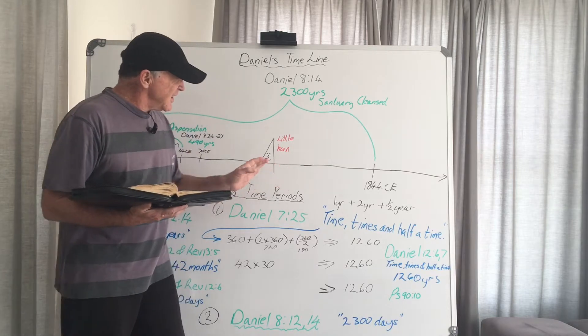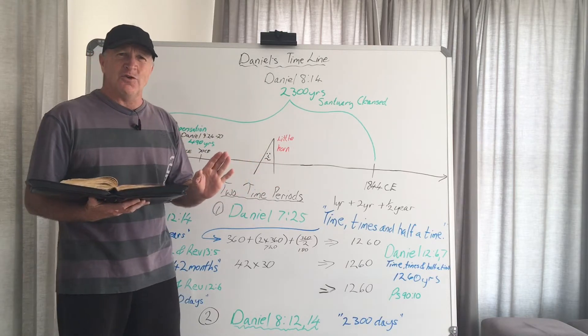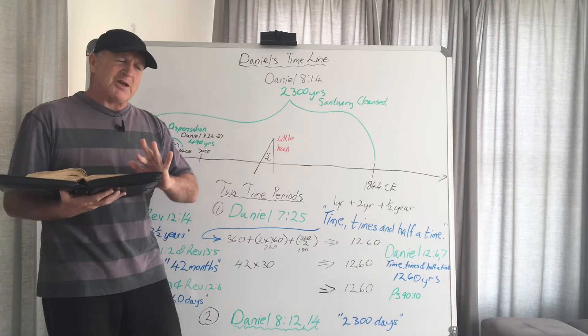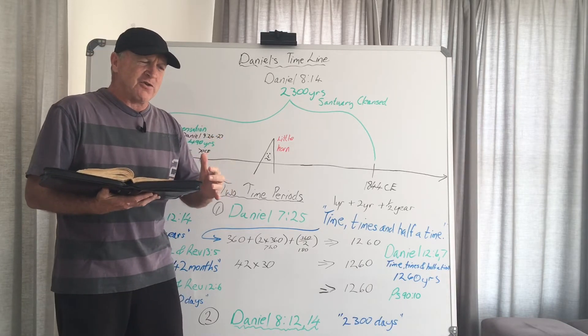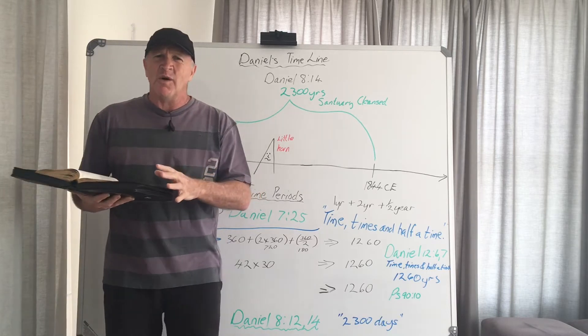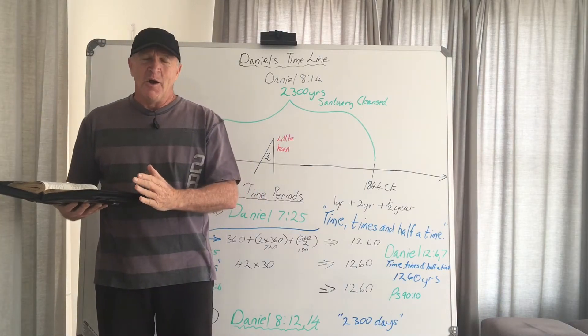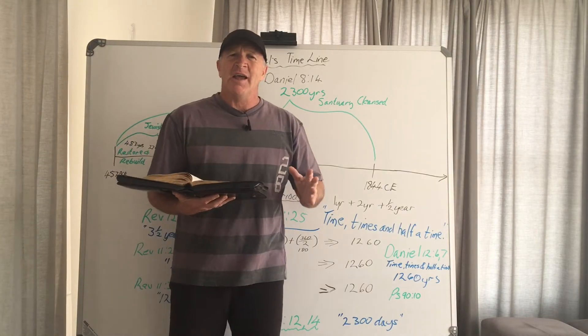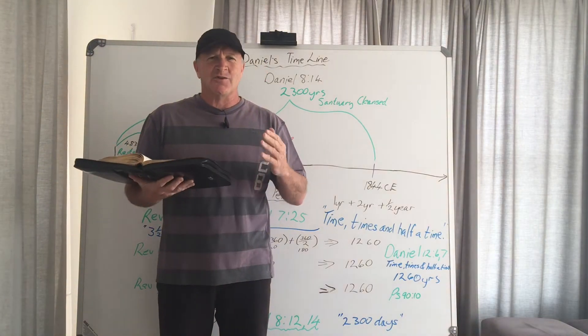So what this little horn succeeded to do is that as it influenced the first generation, this information was transferred to the second generation. And finally, what was an error, because of being passed to generation to generation to generation, it finally was seen as a truth.